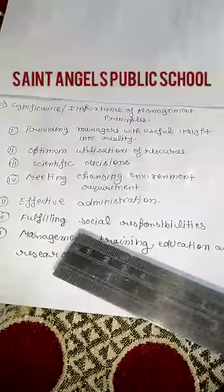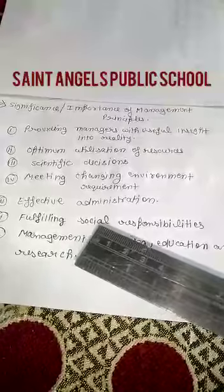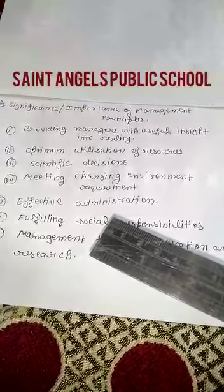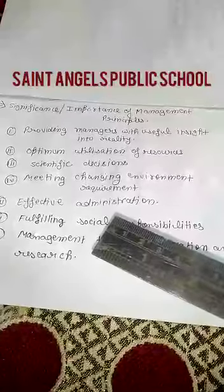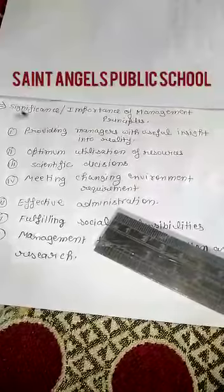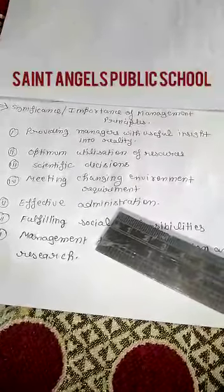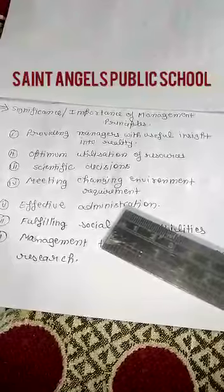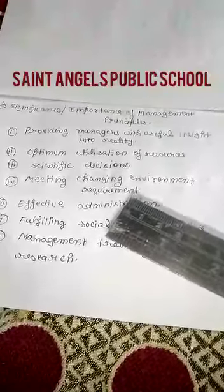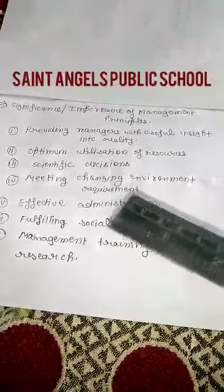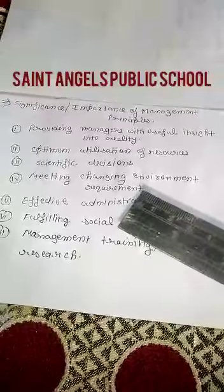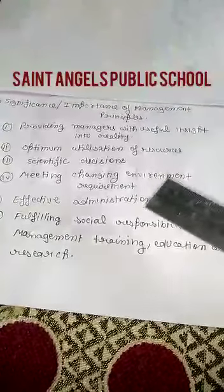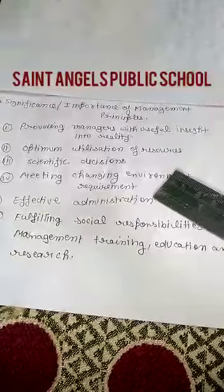We will now cover our sixth importance of management principles, which is fulfilling social responsibility. As you read in the first chapter, management has its own social objectives — such as not causing pollution, not providing adult-rated goods, providing goods that society demands from manufacturers at reasonable rates, supporting the government during problems in society, and giving donations. These were the social objectives you studied in the first chapter.